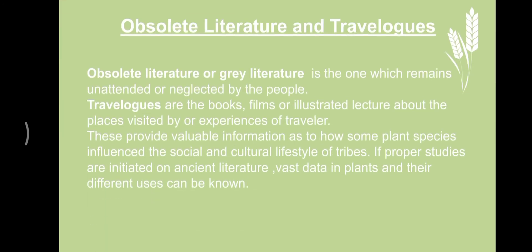Obsolete literature is also known as gray literature, because it is literature which remains unattended or neglected by scientists and experienced persons. Travel logs are books, films, or illustrated lectures about places visited by travelers; they provide valuable information as to how some plant species influence the social and cultural lifestyle of tribes. If proper studies are initiated on ancient literature, vast data on plants and their different uses can be known.